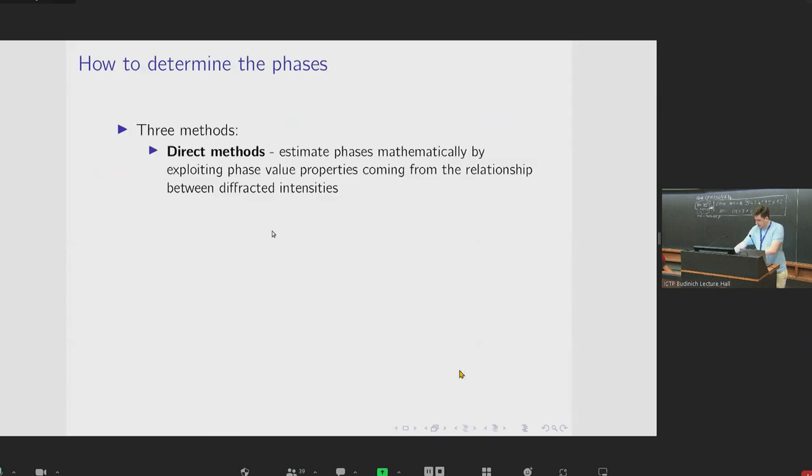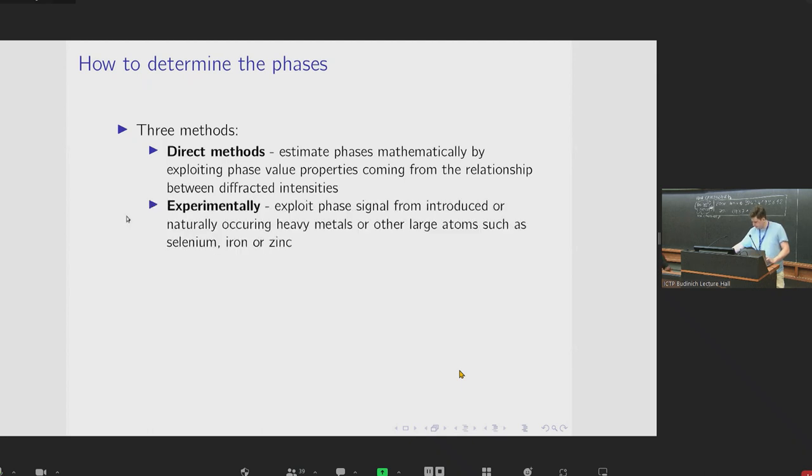So classically, there are a number of approaches that are used to find these phases. Firstly, there are these so-called direct methods, which involve exploiting phase value properties coming from the relationship between diffracted intensities. And this is sort of the approach we're taking with the quantum annealing. So I'll come back to this in a bit. Secondly, there are experimental methods that exploit phase signals from naturally occurring or even deliberately introduced heavy metals or other large atoms in the structure.